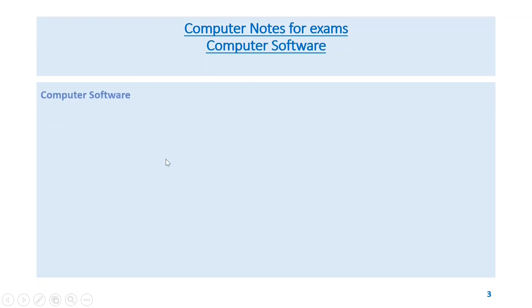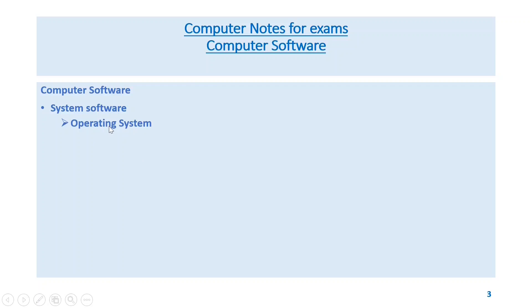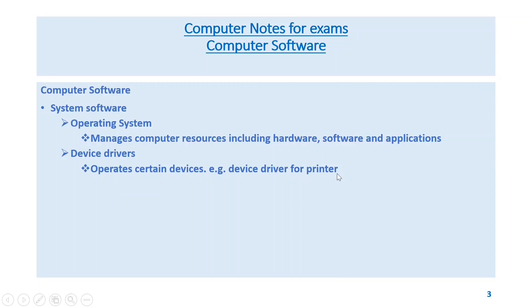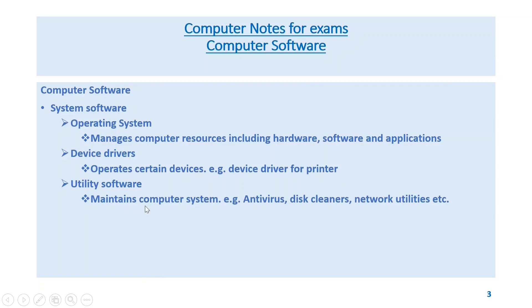Computer software can be classified into system software and application software. System software includes the operating system, which manages computer resources including hardware, software, and applications. Device drivers operate certain devices — for example, a device driver for a printer.